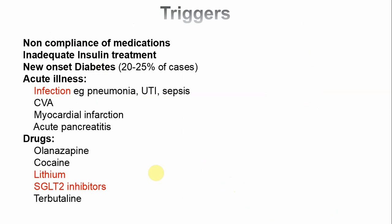The most common trigger for DKA is that the patient is either not taking adequate insulin or is non-compliant with medication entirely. In about 20–25% of cases, DKA may be the first presentation of diabetes. Acute illnesses such as sepsis, infection (pneumonia, urinary tract infection), or stroke can trigger DKA. Any type of injury — MI, pancreatitis, PE, or road traffic accident — can also trigger it.